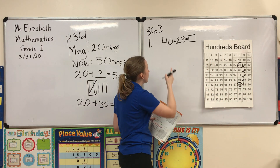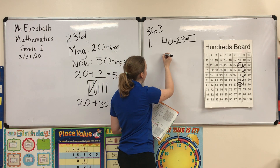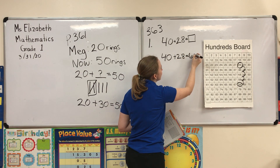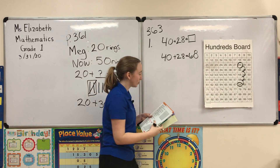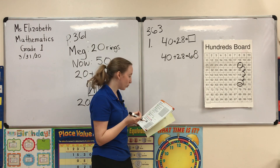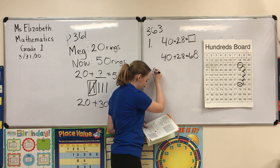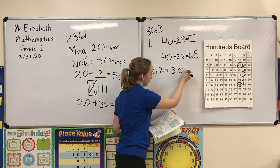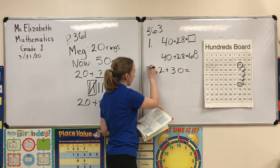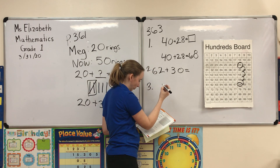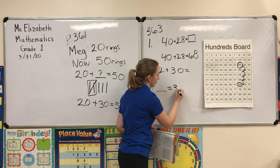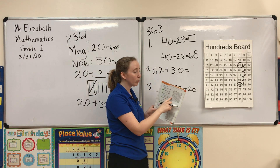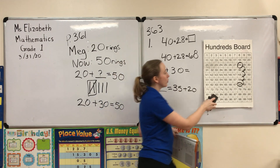Forty has four tens, so we count: one, two, three, four rows — and circle that number. So we know 40 plus 28 equals 68. Now you have two more equations below: number two is 62 plus 30, and number three is below that. You can use the same hundreds chart trick to solve those — I'm going to walk you through both of them.